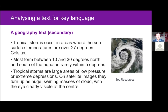In the example on this slide, it's a geography lesson at secondary level. We've identified that since the text is presenting lots of facts about tropical storms, the tense used is always the present tense — the present simple or simple present. For example, 'tropical storms occur,' not 'tropical storms are occurring' or 'tropical storms have occurred.' And we can identify the following present tense verbs in these sentences.